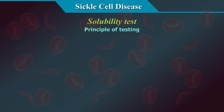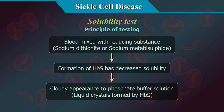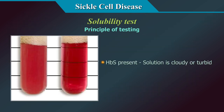The solubility test is the most common screening test for sickle cell disease or presence of HbS. It is based on the decreased solubility of deoxygenated HbS when combined with a reducing agent such as sodium dithionite or sodium metabisulphite in a phosphate buffer solution. Hemoglobin S forms liquid crystals, giving a cloudy appearance. If HbS is present, the solution appears cloudy or turbid; if not, it will appear transparent.